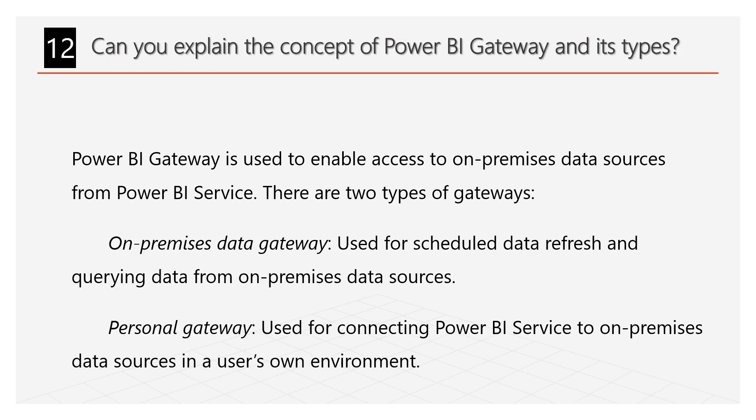Can you explain the concept of Power BI Gateway and its types? Power BI Gateway is used to enable access to on-premises data sources from Power BI Service. There are two types of gateways. First, the on-premises data gateway, used for scheduling data refresh and querying data from on-premises data sources. Second, the personal gateway, used for connecting Power BI Service to on-premises data sources in a user's own environment.